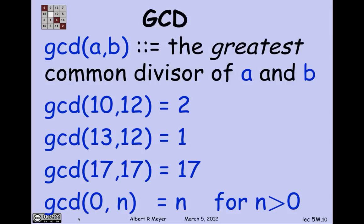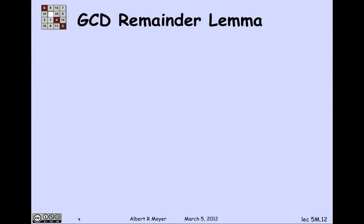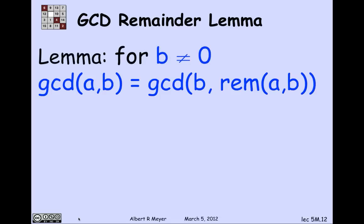Now we come to a key property of GCD called the remainder lemma. It says: if b is not 0, then the GCD of a and b equals the GCD of b and the remainder of a divided by b. Let's look at the division theorem applied to a divided by b: a equals a quotient times b plus the remainder.